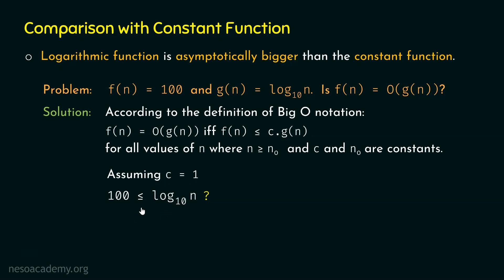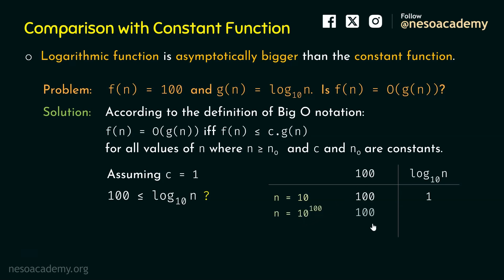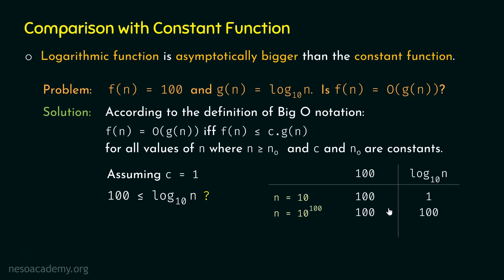Let's draw a table for 100 and log n base 10 with different values of n. For n = 10: f(n) = 100 and log 10 base 10 = 1. For n = 10^100: f(n) = 100 and log 10^100 base 10 = 100. At this point, f(n) equals c · g(n). Previously, f(n) was greater than c · g(n).